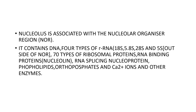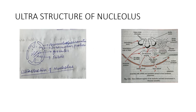Nucleolus is made up of proteins, DNA and RNA. It contains DNA, four types of ribosomal RNA — for example, 18S, 5.8S and 28S ribosomal RNA. 5S rRNA is found outside the NOR. 70 types of ribosomal RNA binding proteins, nucleolin and RNA splicing nucleoproteins, phospholipids, orthophosphates and calcium ions and some other enzymes are also present in the nucleolus.